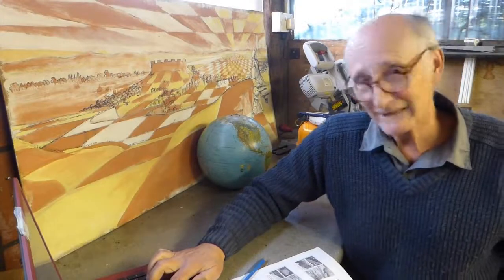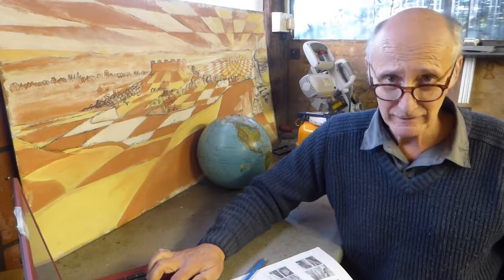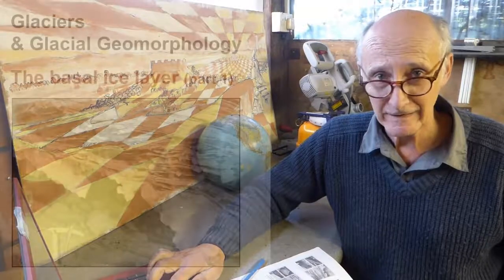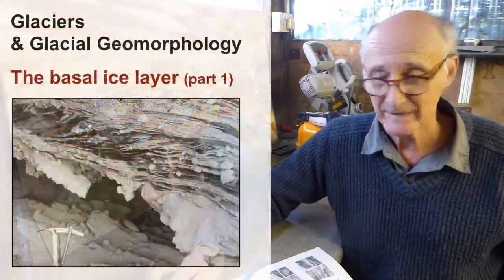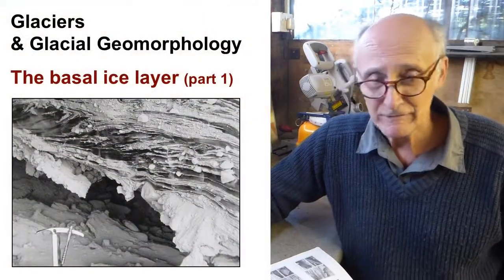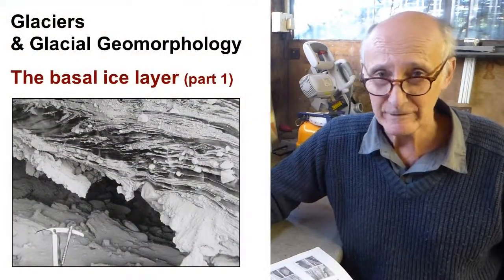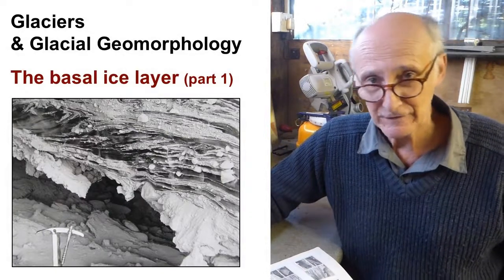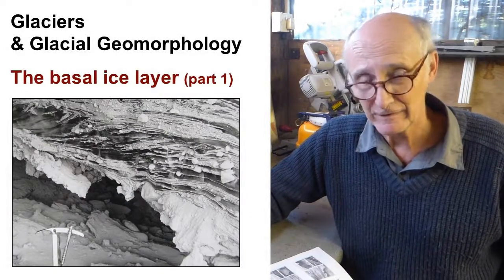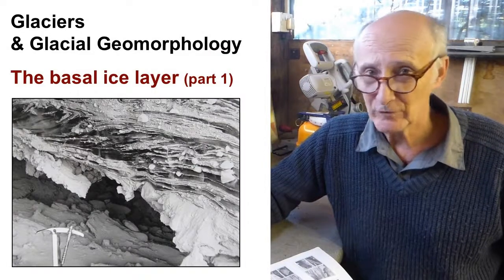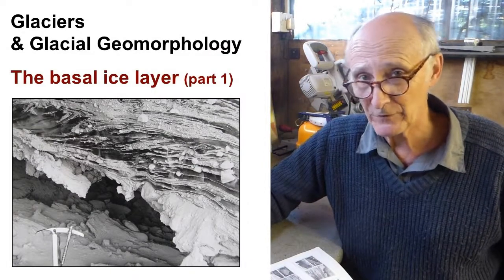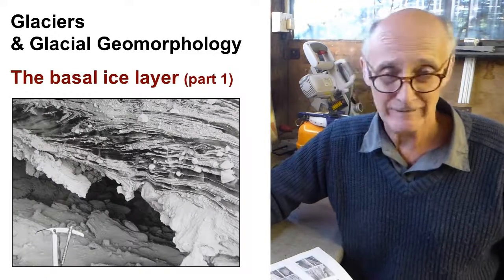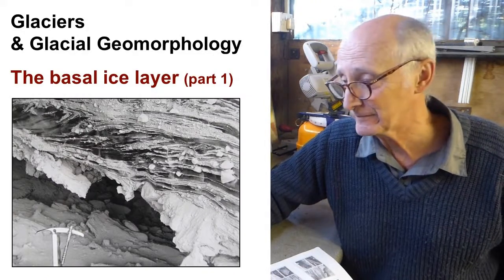Hello everybody, welcome back to Glaciers and Glacial Geomorphology. In these next two videos we're talking about the basal ice layer. Basal ice is ice which occurs at the bottom of many glaciers and it isn't formed by the deposition and recrystallization of snow at the surface, but it is either formed or modified by processes operating at or close to the bed — processes such as debris entrainment.